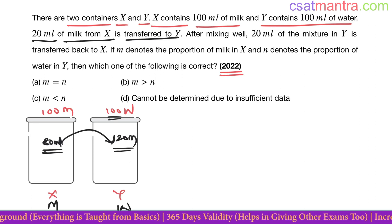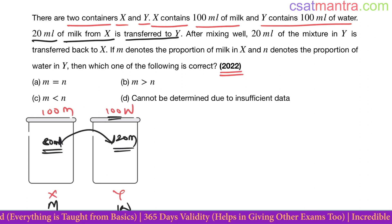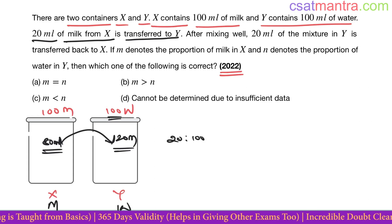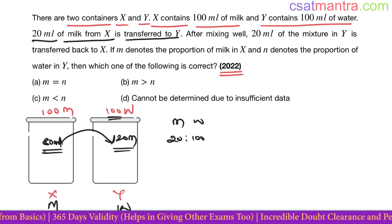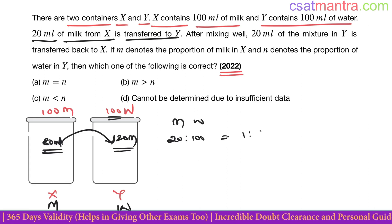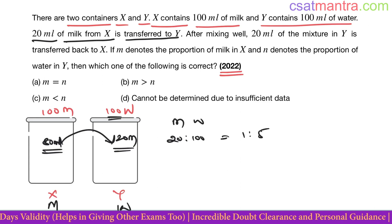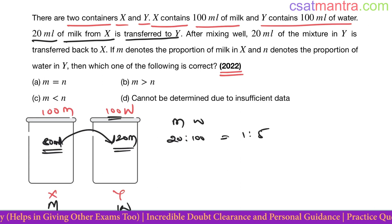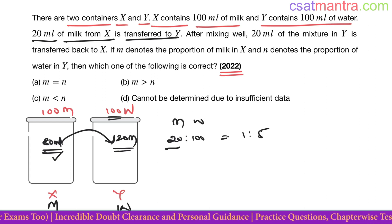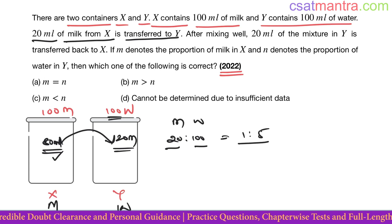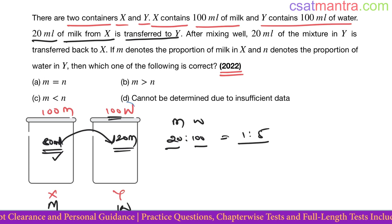After the transfer, Y has 20 ml of milk and 100 ml of water, so the ratio of milk to water in Y is 1:5. Container X still has 80 ml of pure milk.